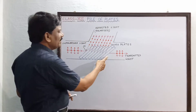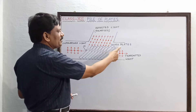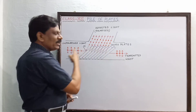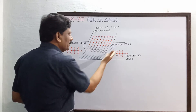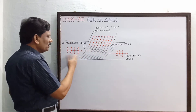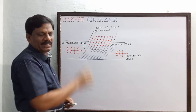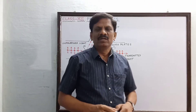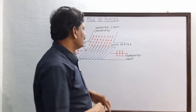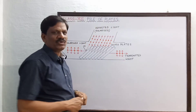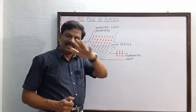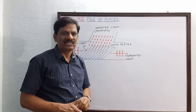You can see here there are many glass plates arranged one over the other, and they are inclined to the axis of a cylindrical tube. So this device consists of a cylindrical tube inside which glass plates are arranged inclined to the axis of the tube.